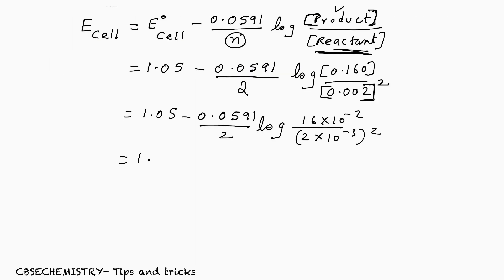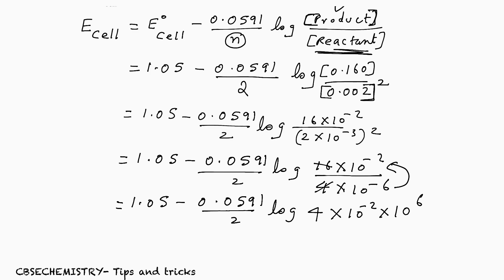Now, how to solve this? 1.05 minus 0.0591 by 2 log 16 × 10^-2 by, square the denominator, so 4 × 10^-6. So what you are going to get? 1.05 minus 0.0591 by 2 log, 4 and 16 you can cut, it becomes 4. 10^-6 will come to the numerator, so it becomes × 10^-2 × 10^6. 1.05 minus 0.0591 by 2 log 4 × 10^4.